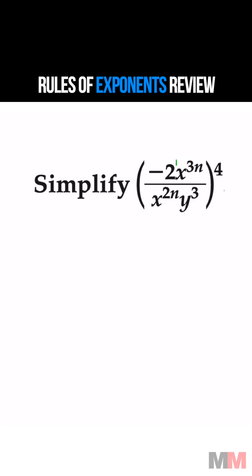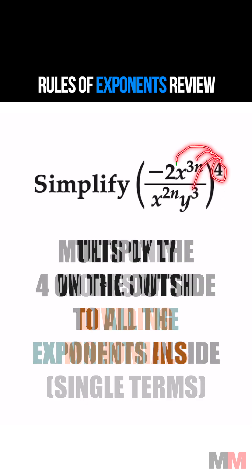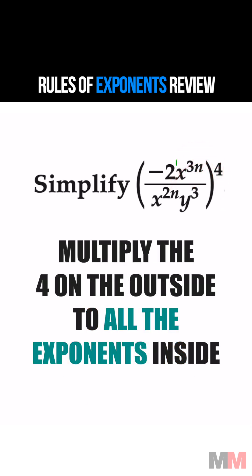I would focus on this four first. If you have power of a power and these are single terms, you multiply this four to the exponents. You're going to do that four times and it will turn into this.